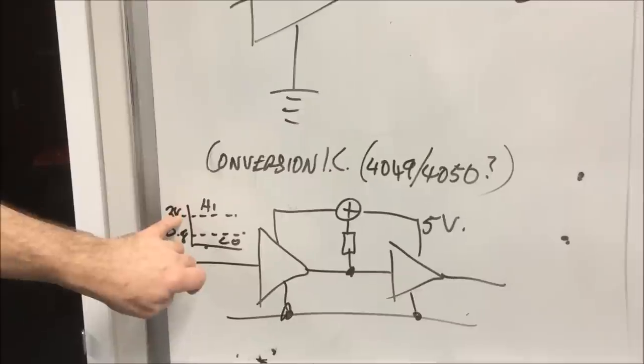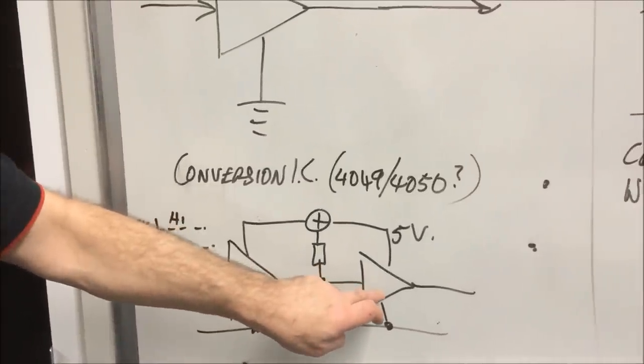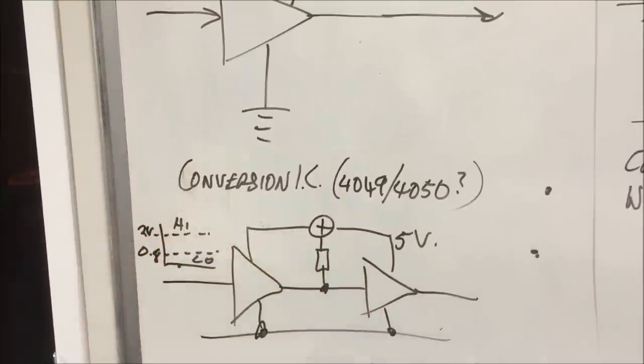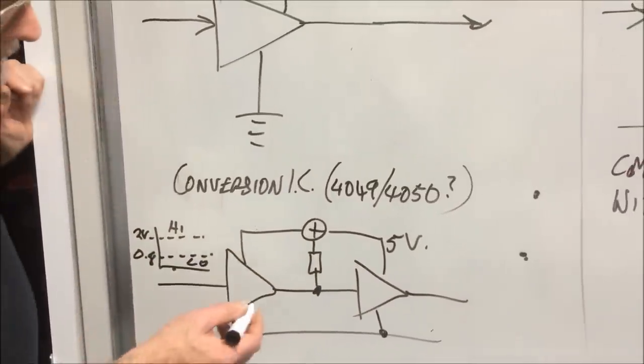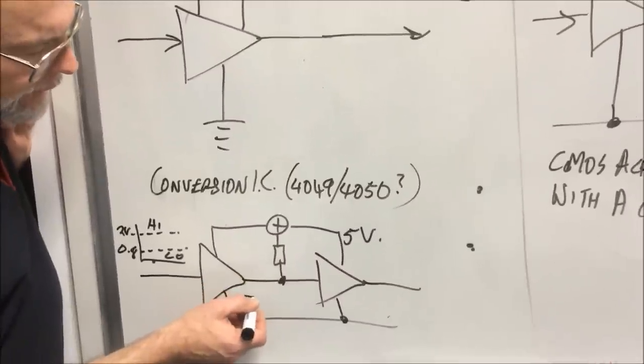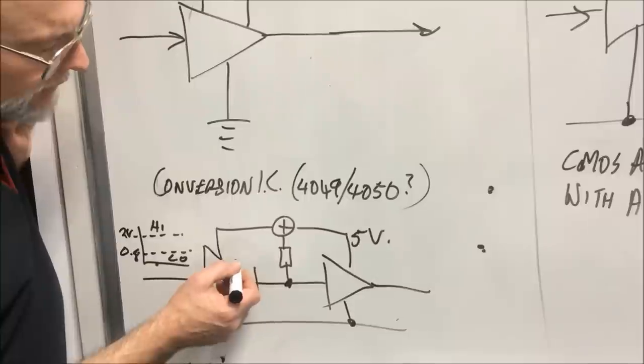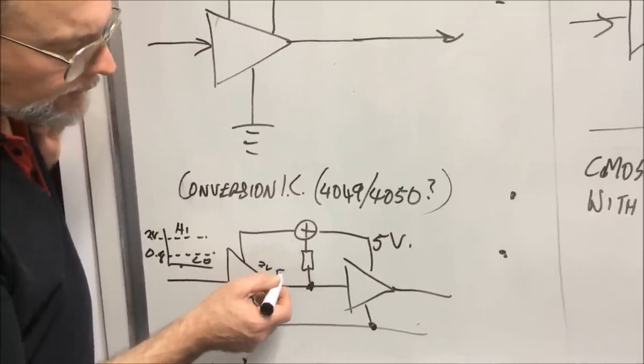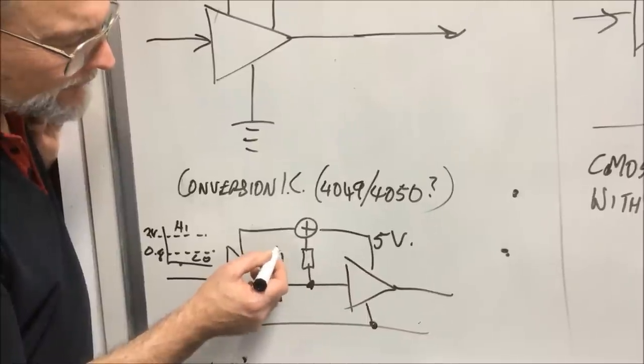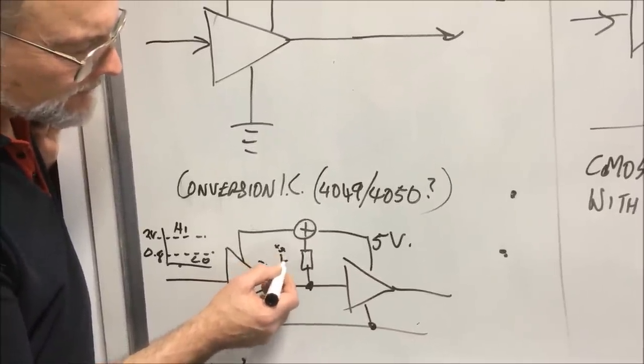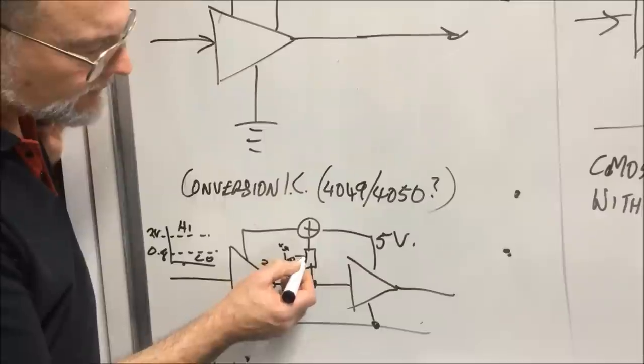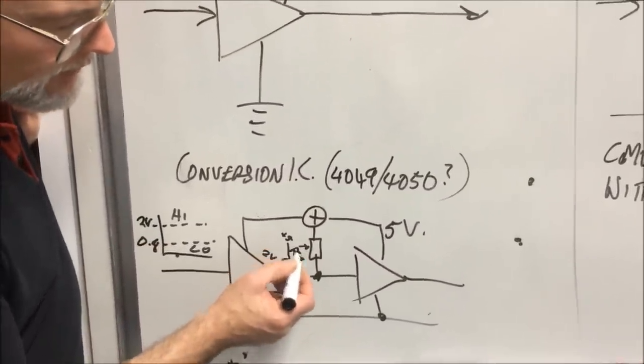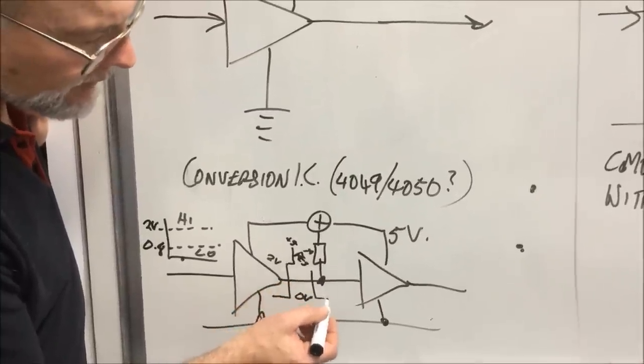Logic high is 2 volts in CMOS land, it can be as high as 3.5 on the same 5 volt rail. To overcome that, this will if it was going from low to high, it would stop at 2 volts, which would be a high for the TTL. But then the resistor would continue to pull it up to plus 5. So it would come across at plus 5 and then come down later on.